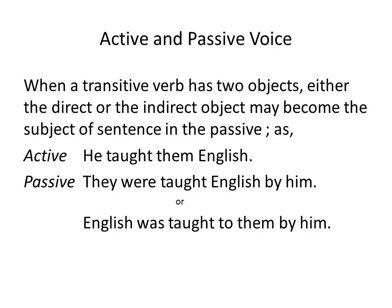When a transitive verb has two objects, either the direct or the indirect object may become the subject of the sentence in the passive. For example — Active: 'He taught them English.' Passive: 'They were taught English by him.' Another example — Active: 'They told me the truth.' Passive: 'The truth was told to me,' or 'I was told the truth.'